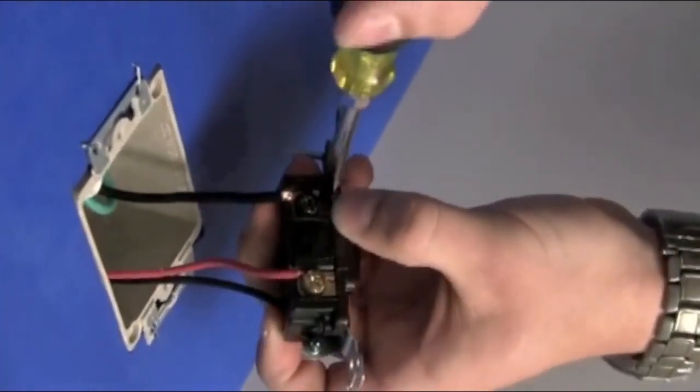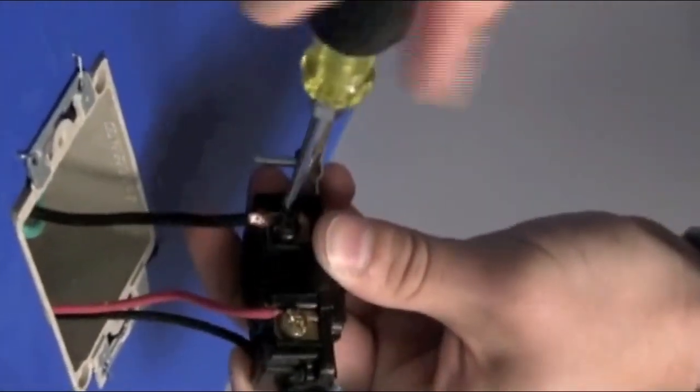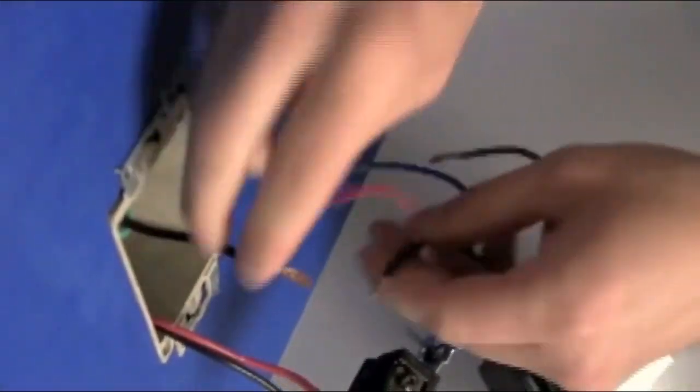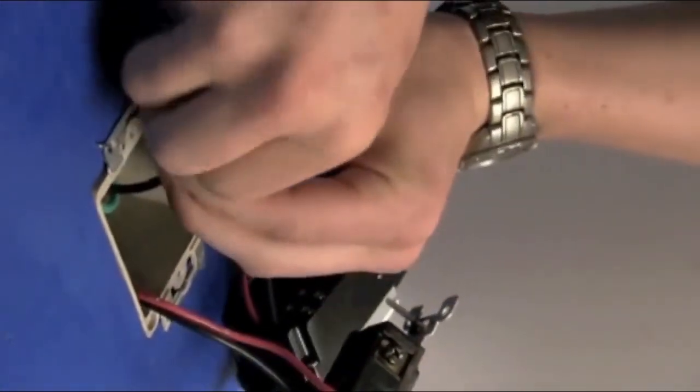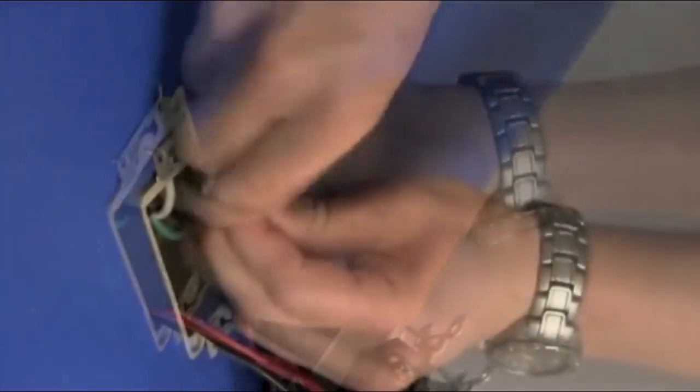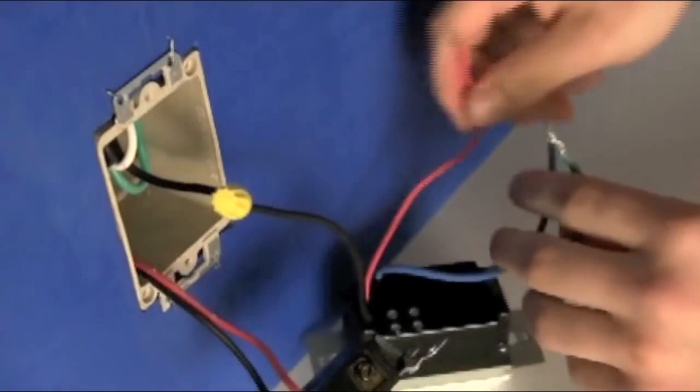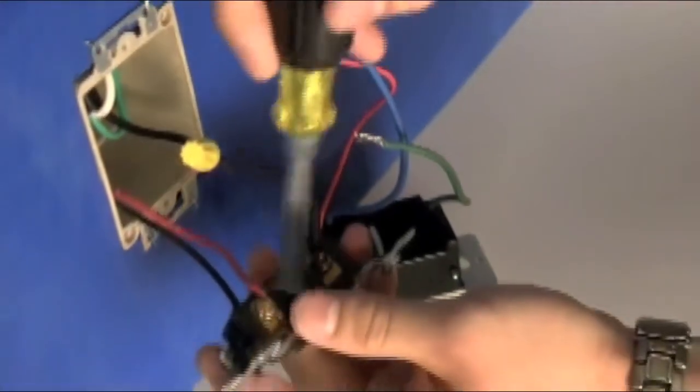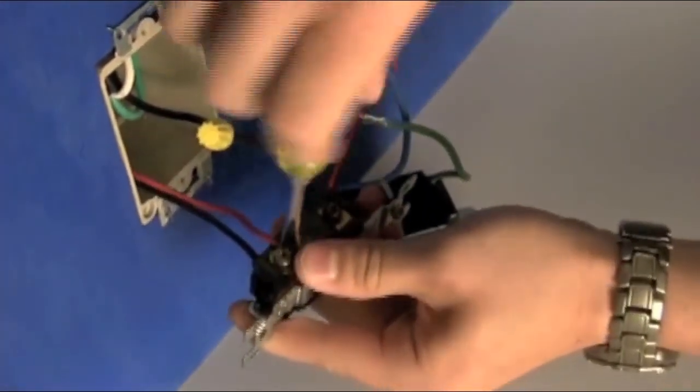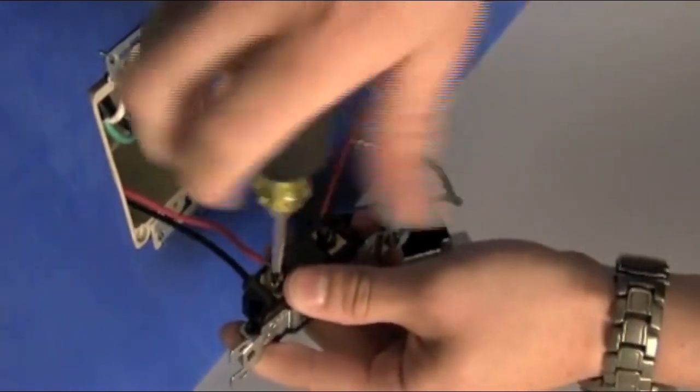We're going to remove the common and connect it to the black wire on the timer. We're going to remove one of the remaining wires from the three-way switch and connect it to the red wire on the timer.